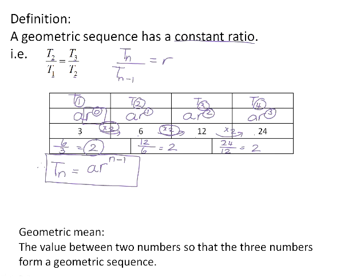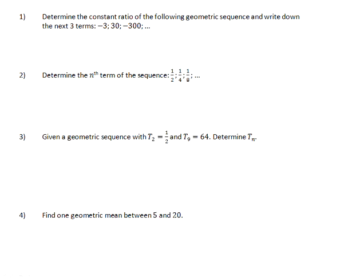The geometric mean — just like we had an arithmetic mean in a sequence, we can also have a geometric mean. The geometric mean is the value that we insert between two numbers; we add a third number into a sequence between two given numbers, so that the three numbers together form a geometric sequence. Please pause the video and try these examples on your own in your activity booklet, and then check them from the video.